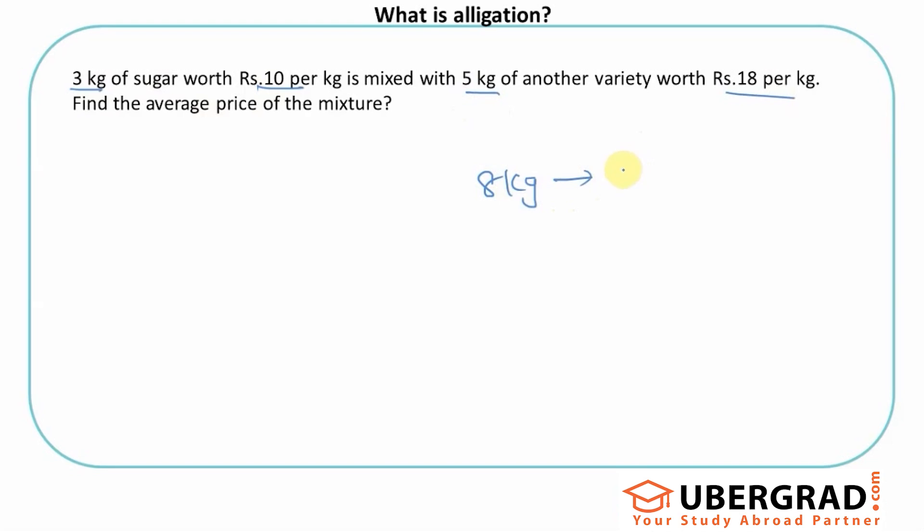What would be the mixture price, the new price of the mixture? That's one way of looking at it. Alligation, as I said, is joining things. We have mixed two things and now we're asking you what is the resultant price of the new mixture per kg.